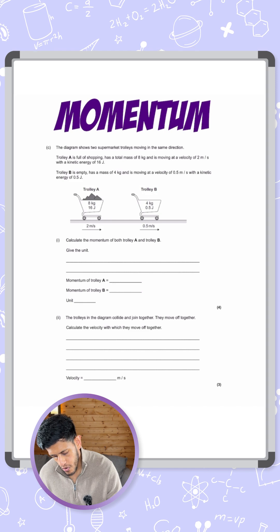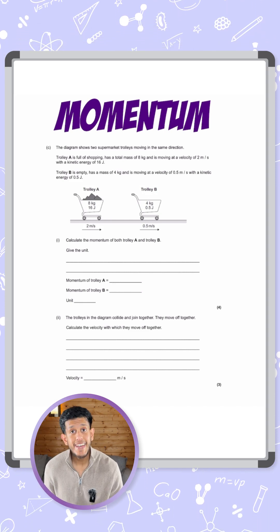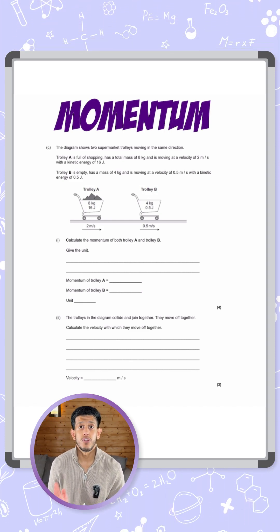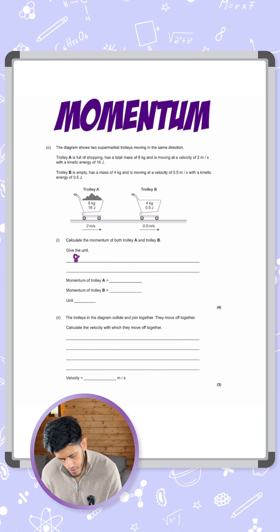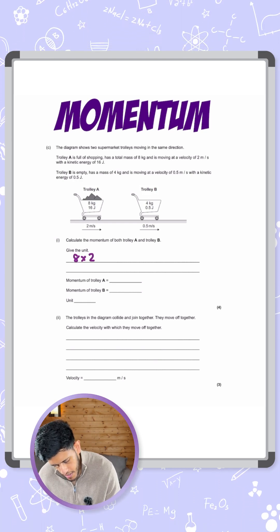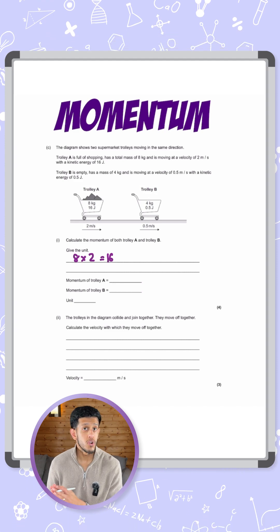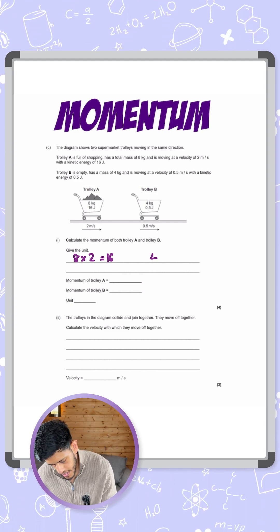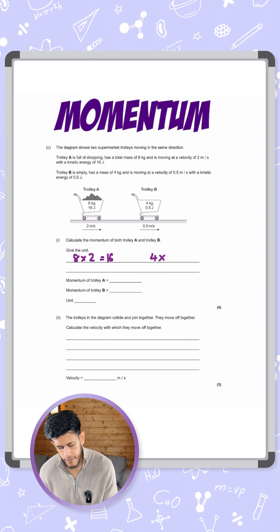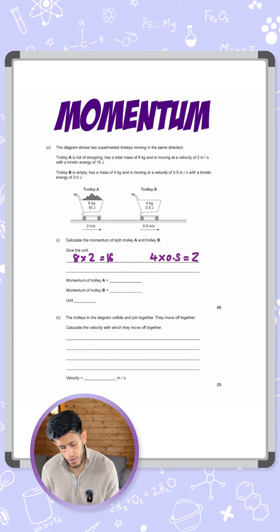For trolley A, the mass is 8 kilograms. Remember momentum is mass times velocity, so 8 kilograms multiplied by 2 for the velocity gives 16. For trolley B, it has a mass of 4 kilograms multiplied by the velocity of 0.5 meters per second to give you 2.